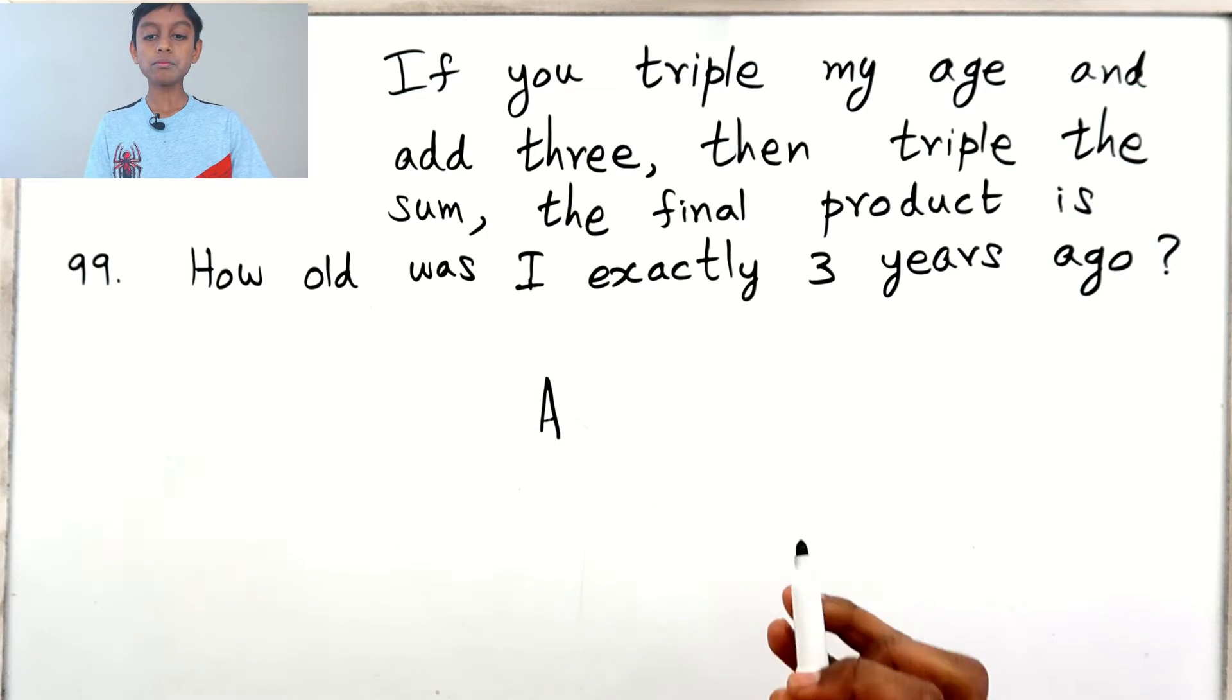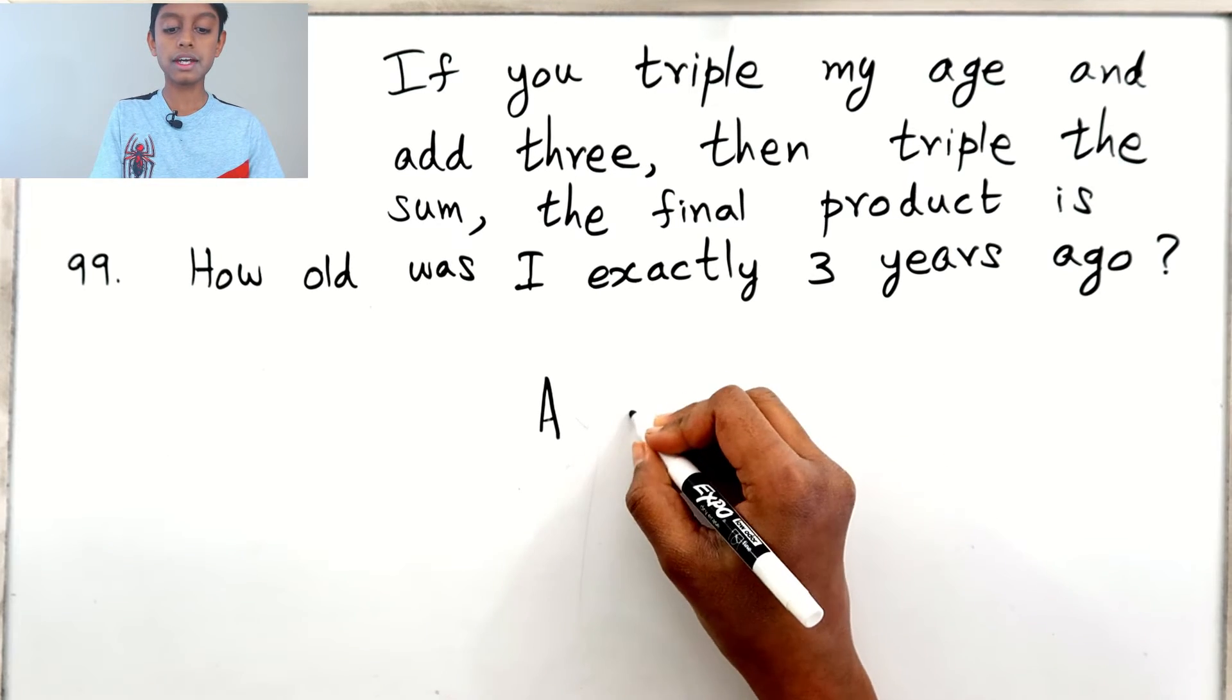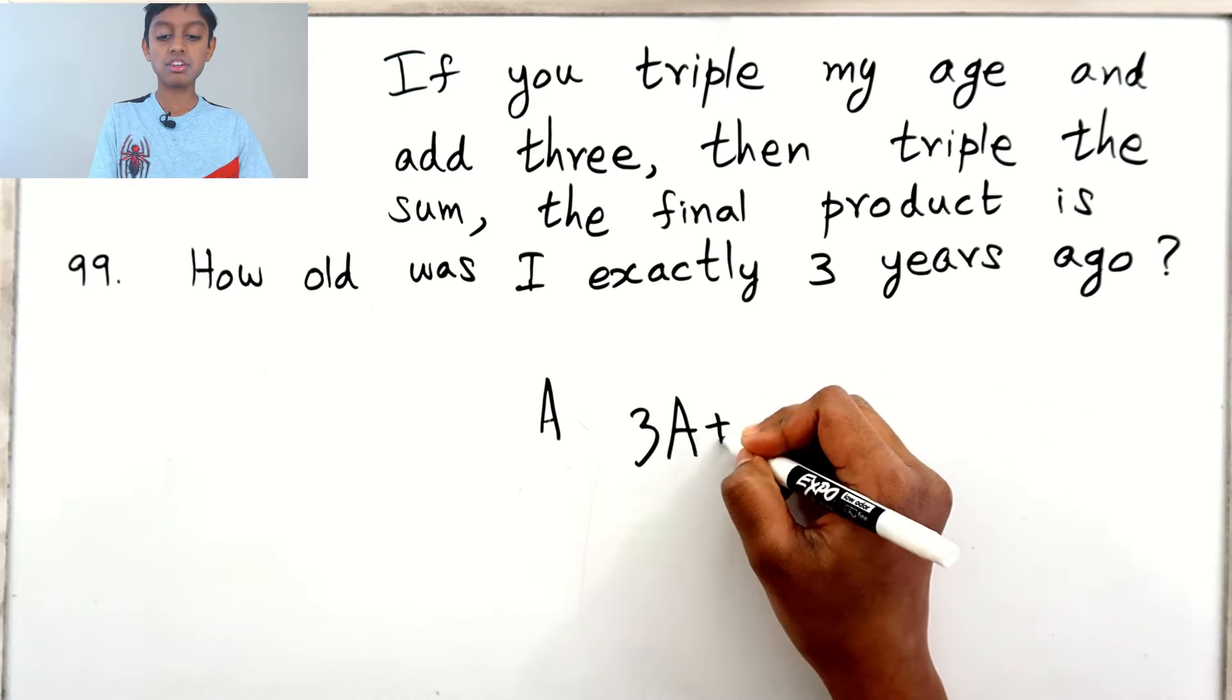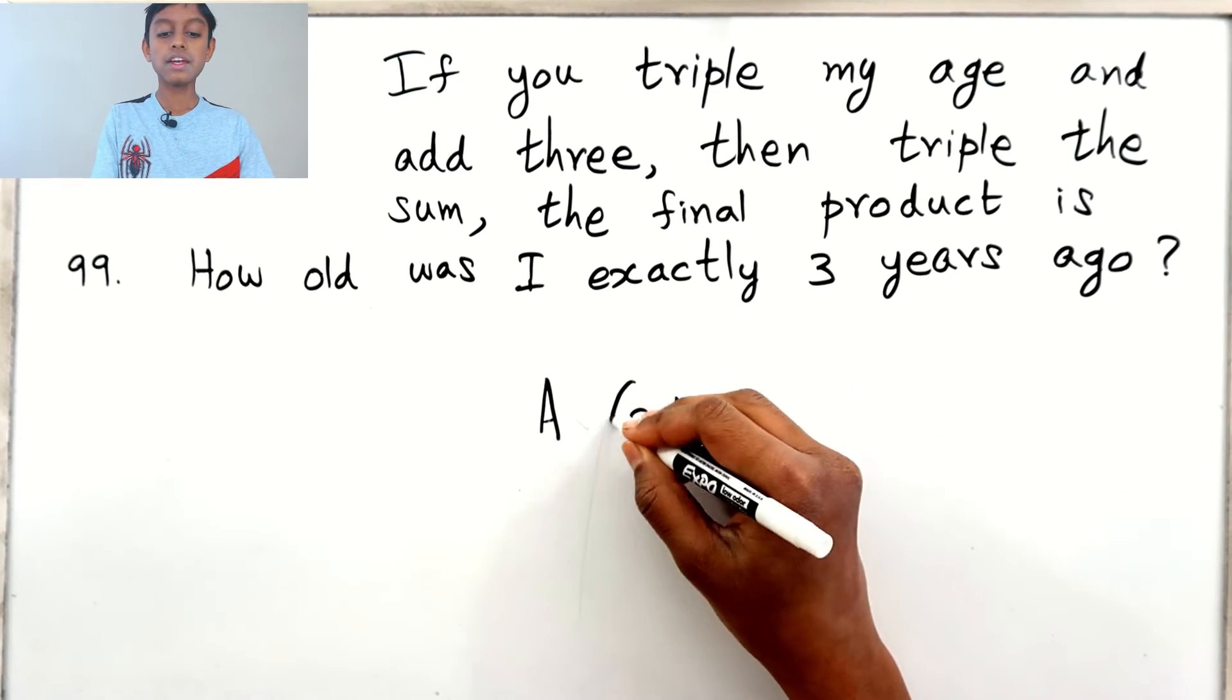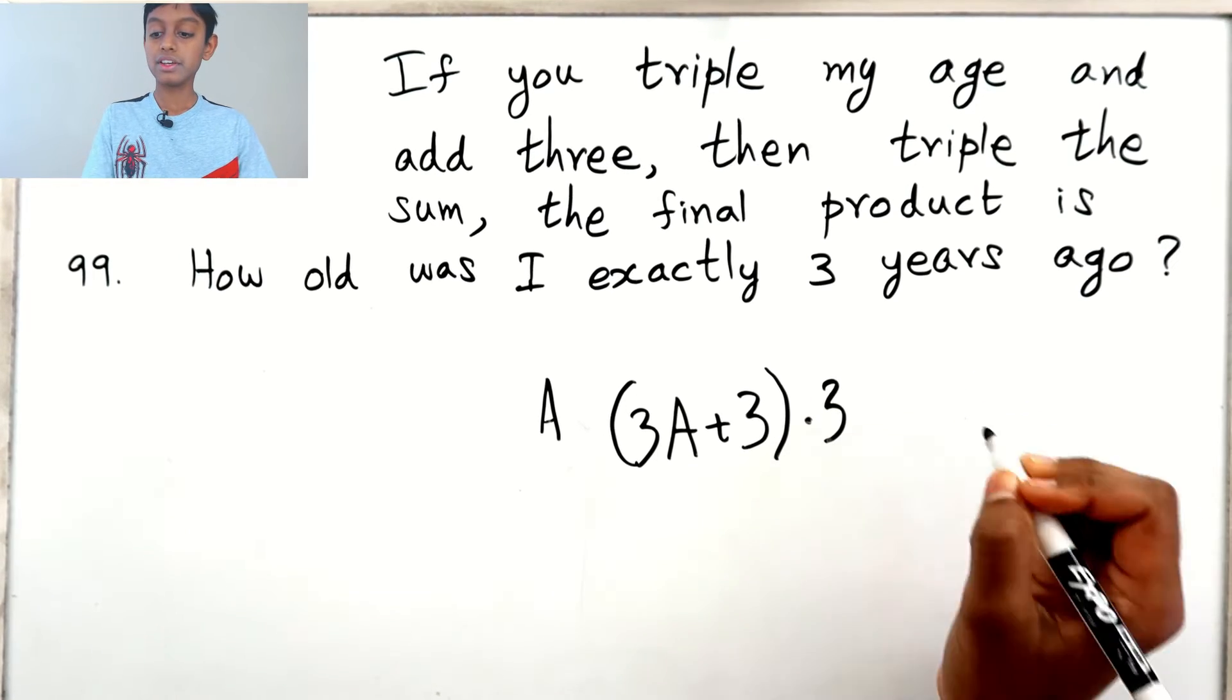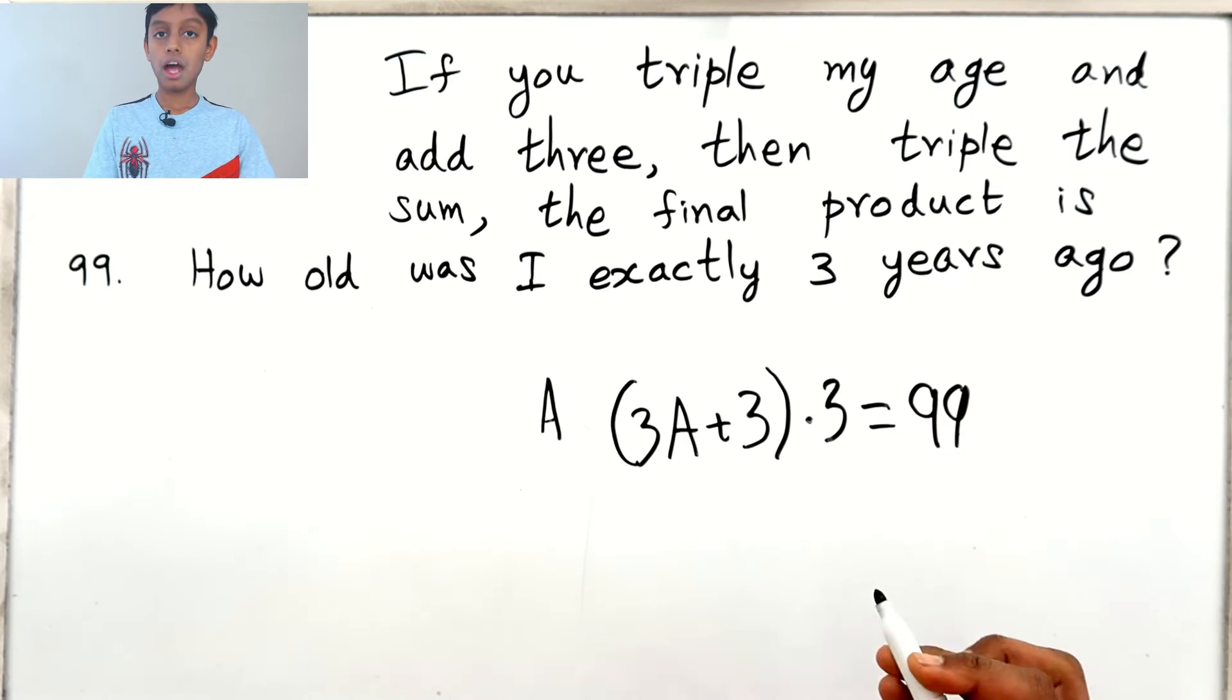So A. He's tripling this age, so we need to triple A to get 3A. Then he adds 3, so let's put plus 3. Then he multiplies this by 3. So this equals 99.